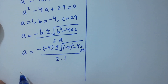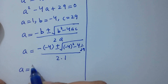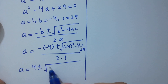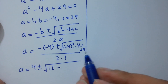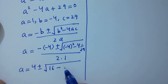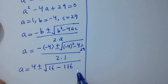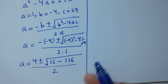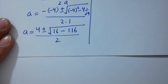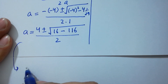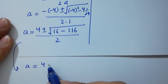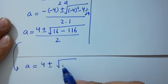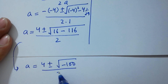So a equals 4 plus or minus square root of: 4 times 4 is 16, minus 4 times 29 is 116, over 2. That gives us 4 plus or minus square root of (16 minus 116), which is square root of minus 100, over 2.